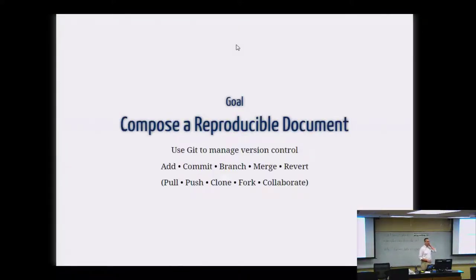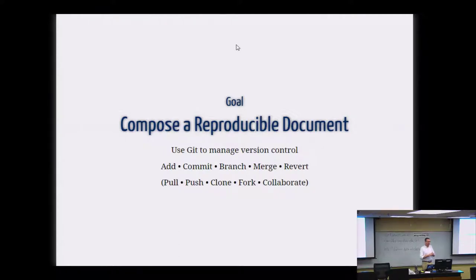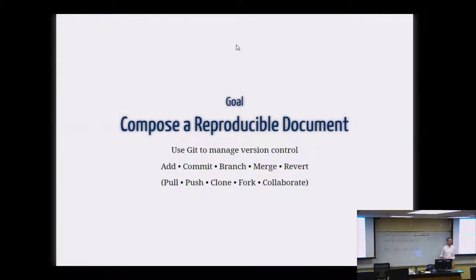The main things we're going to try and learn today: we're going to use Git, and our goal is to create a reproducible document. The main Git commands we're going to cover are add, commit, branch, merge, and revert. We're also definitely going to do push, pull, and clone. Fork and collaborate we'll leave off until part two.